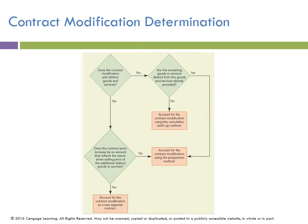Here's a flowchart that demonstrates the different items related to modifications. The first question is: does the contract modification add distinct goods and services? If yes, does the contract price increase by an amount that reflects a standalone selling price? If yes, we account for the contract as a new separate contract. If no, the next question is: are the remaining goods or services distinct? If yes, we account for the contract using a prospective method. If no, we use a cumulative catch-up method. We get very detailed and specific with how we handle items in a contract.